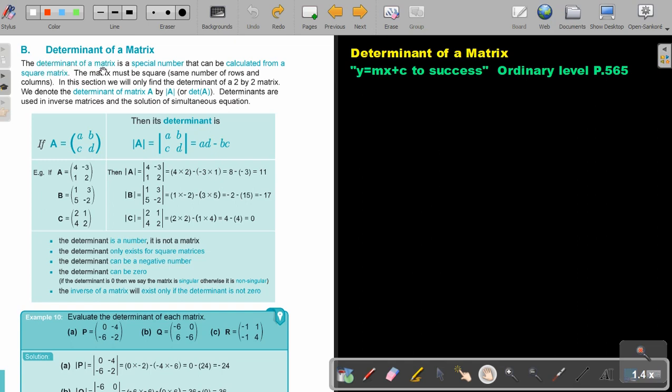The determinant of a matrix is a special number that can be calculated from a square matrix. Can you remember what's a square matrix? It's like a 2 by 2 or a 3 by 3. The rows will be equal to the columns. The matrix must be square. Same number of rows and columns.